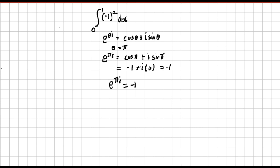So when you have negative 1 raised to power x, that is the same as exponential πi raised to power x. When you use the laws of indices, the power outside multiplies the power inside, so we'll have exponential πix.